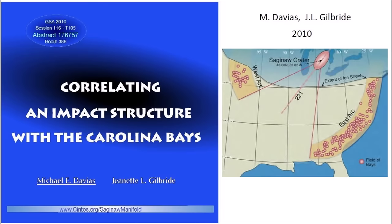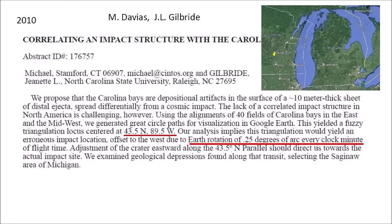In 2010, Michael Davies and Jeannette Gilbride presented to the Geological Society of America, 'Correlating an Impact Structure with the Carolina Bays.' They proposed that the Carolina Bays are positional artifacts in a 10-meter thick sheet of distal ejecta spread differentially from a cosmic impact. Using the alignment of 40 fields of Carolina Bays in the east and Midwest, they generated great circle paths in Google Earth, yielding a triangulation locus centered at 43.5 degrees north, 89.5 degrees west. Their analysis implies this triangulation yields an impact location offset westward due to Earth's rotation of 0.25 degrees of arc per clock minute of flight time.